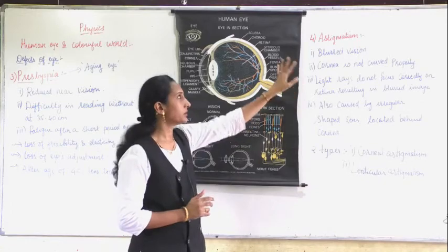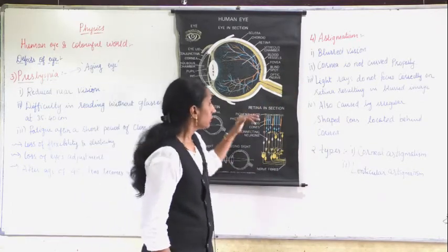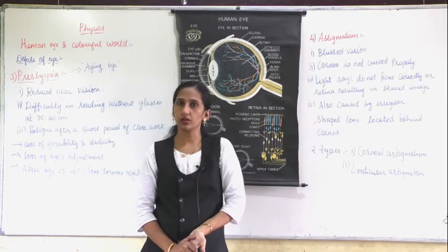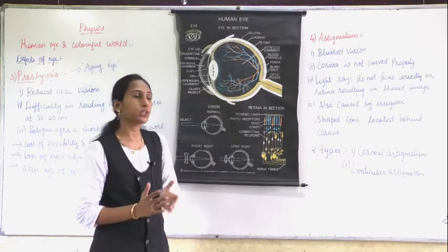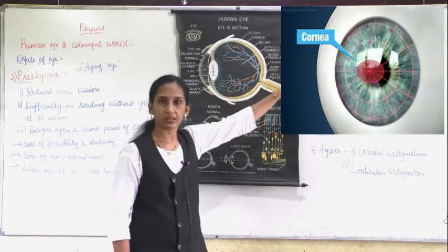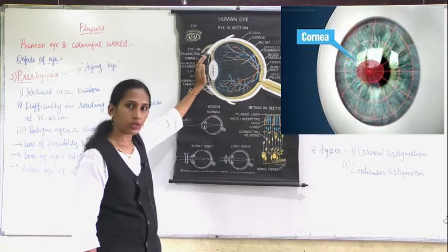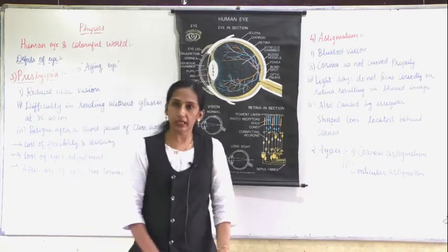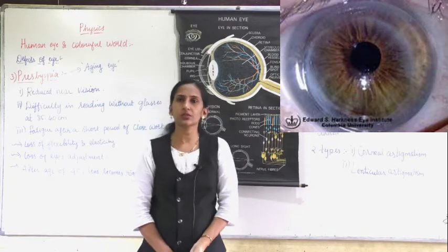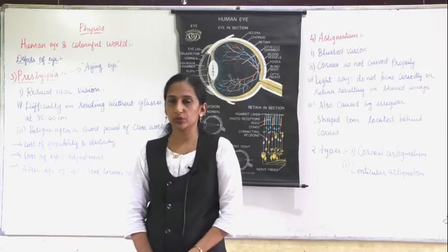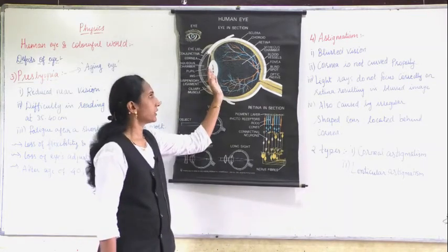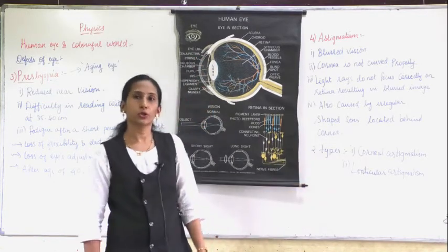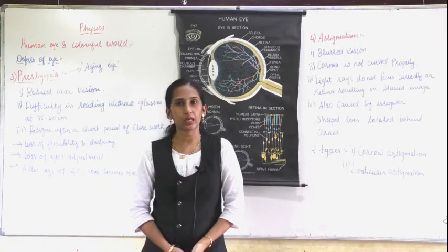Astigmatism is of two types. If the defect is related to the cornea, it is called corneal astigmatism. If the defect is present in the lens, it is called lenticular astigmatism. These two types are just for your understanding — if it is related to the lens, it is lenticular; if related to the cornea, it is corneal astigmatism. If you have any doubts, you can ask me. Thank you.